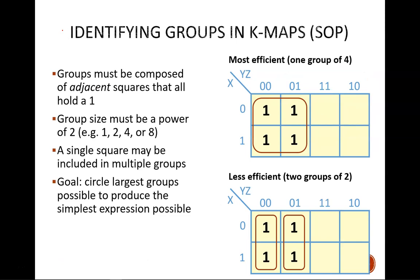Continue in our example of the K-map with all the 1's in the left half. Our next step is to identify groups of 1's. Groups must be composed of adjacent squares that all hold a 1. No blanks allowed. The group size must be an integer power of 2. So, the only options are 1, 2, 4, and 8. A single 1 on the K-map may be included in multiple groups. There are no examples of this here, but we'll see some later. And our goal is to identify the largest groups possible. The bigger the groups, the simpler our final equation will be.